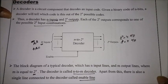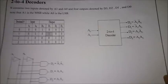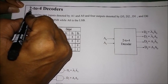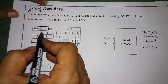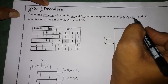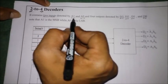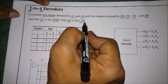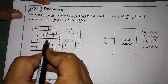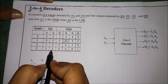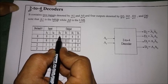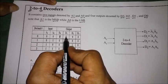Now let us look at the 2-to-4 decoder, which has two inputs and four output lines. It contains two inputs denoted by A1 and A0, and four outputs D3, D2, D1, and D0, where A1 is the MSB and A0 is the LSB. From the two inputs A1 and A0, we get four combinations: 00, 01, 10, and 11. For an active-high decoder, when input is 00, D0 is active high and the rest are low.